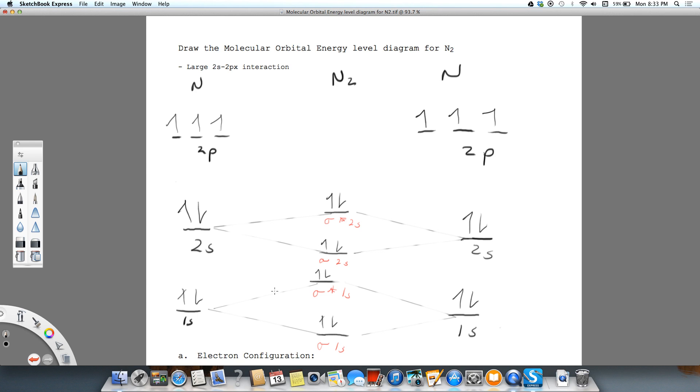Now what's going to happen on our 2p level, and we have large 2s, 2p interaction. So that means that our orbitals, our bonding orbitals are set up this way.